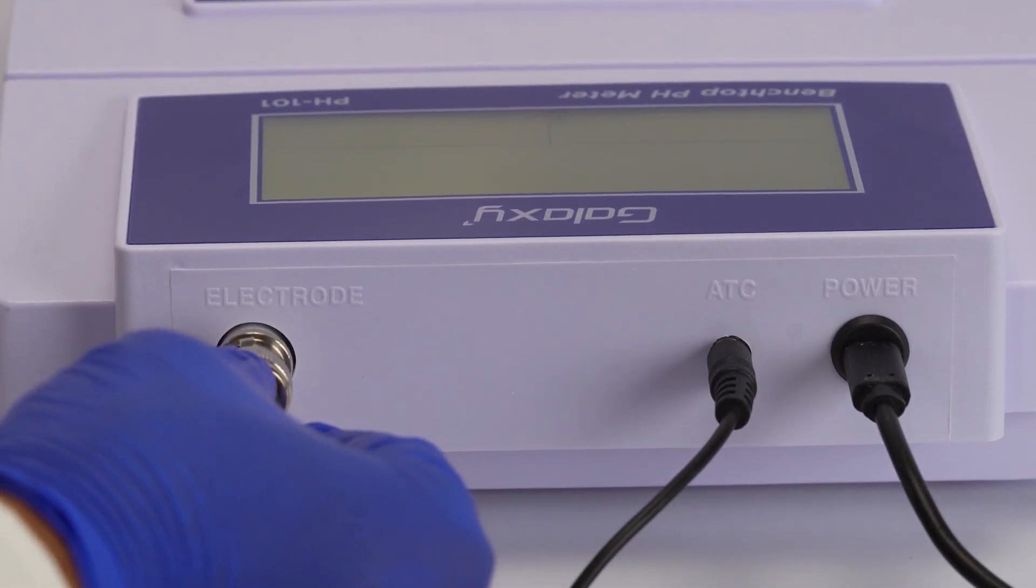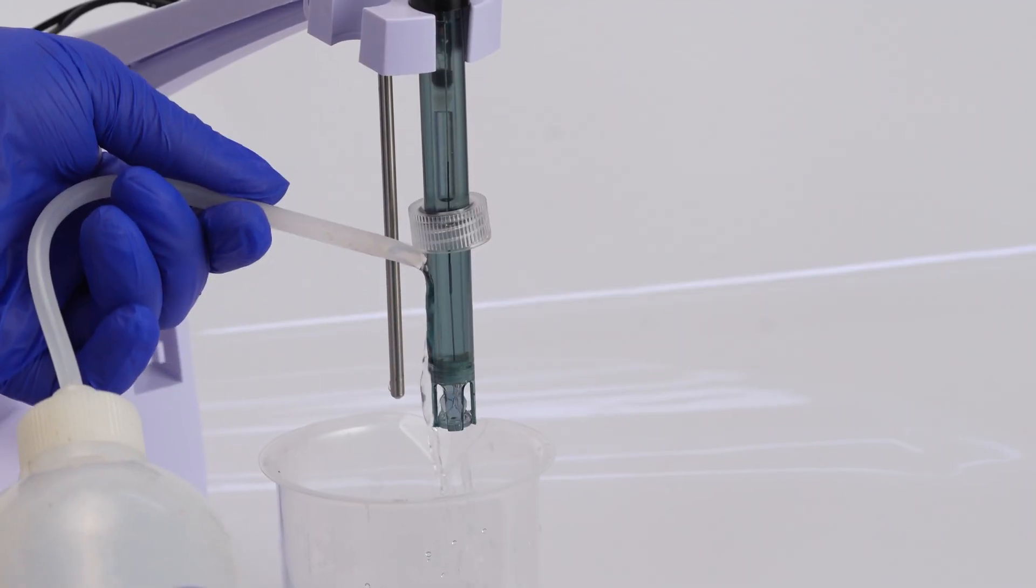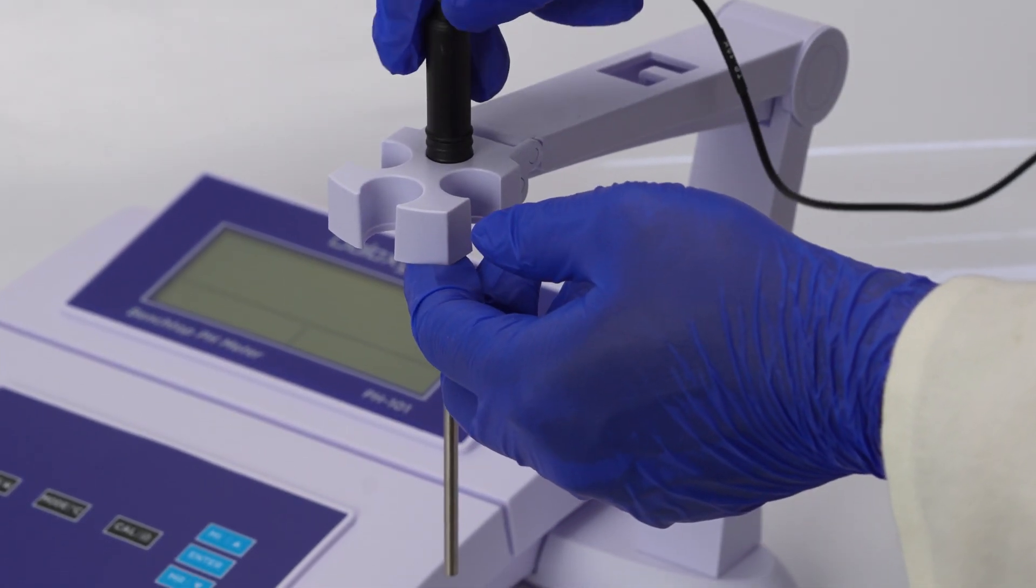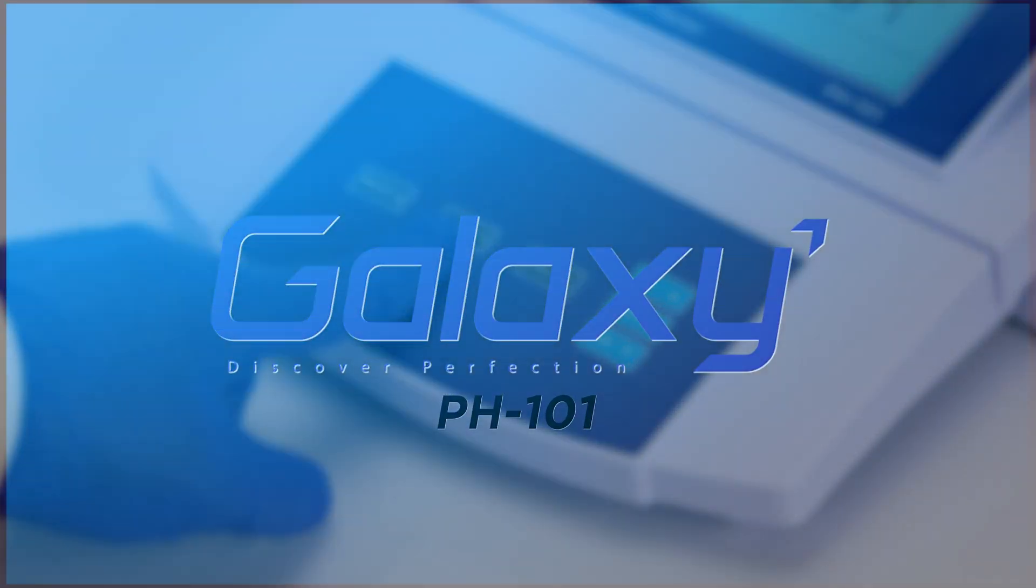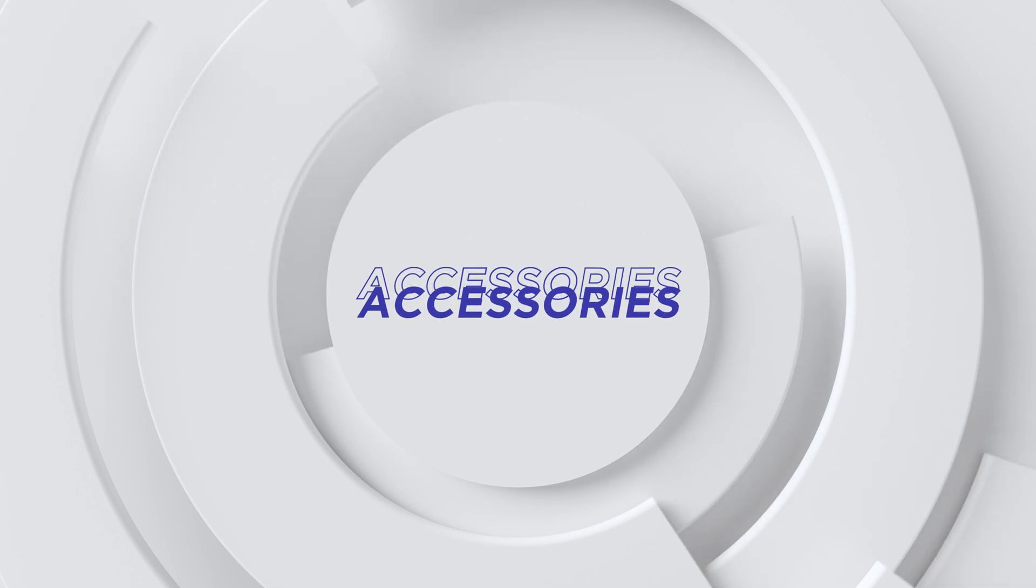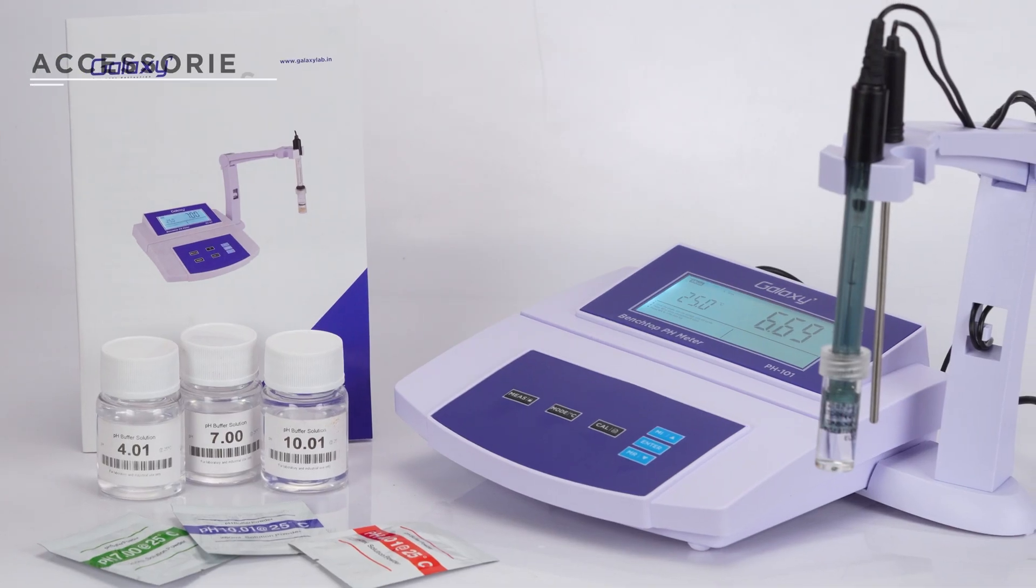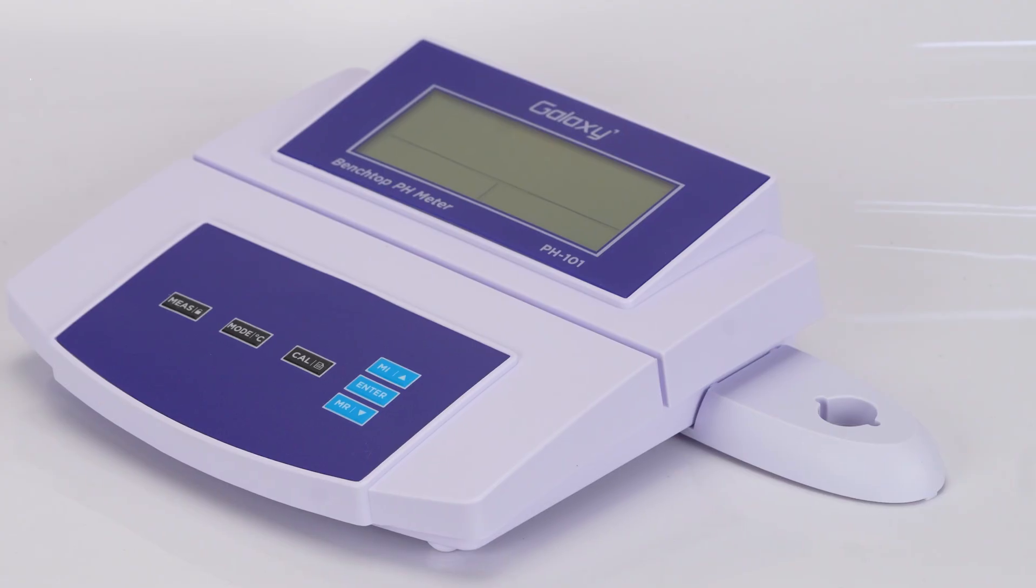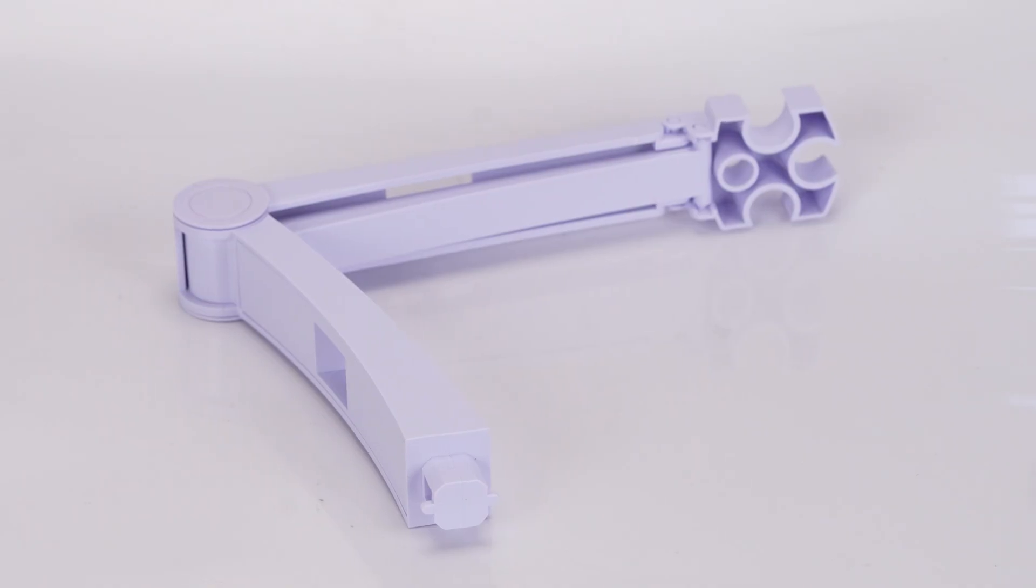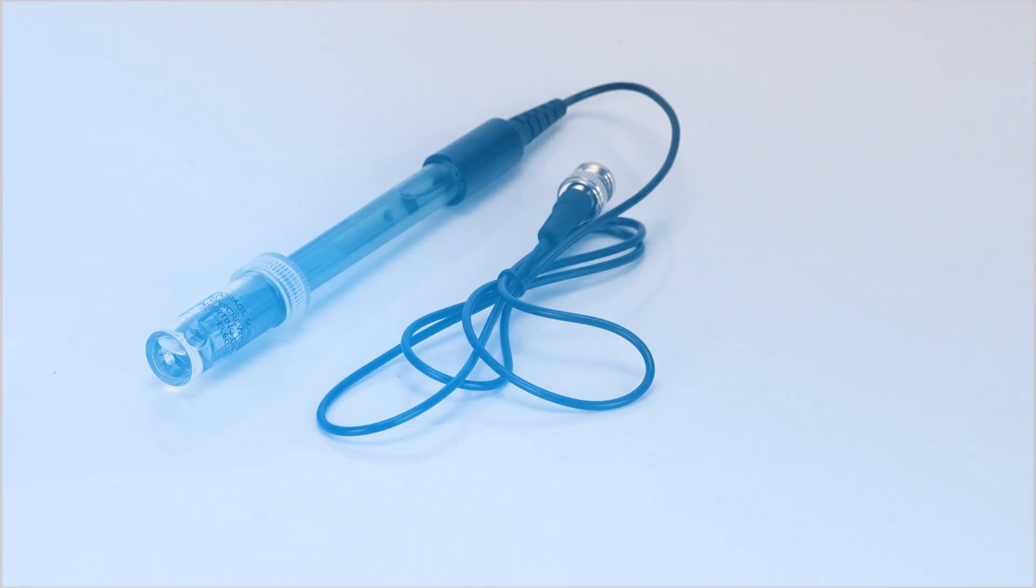Welcome to our tutorial. In this video we will demonstrate the proper setup and operation of the pH 101 pH meter, ensuring accurate and reliable measurements. The pH 101 pH meter comes with the main unit, an electrode arm, a pH electrode, a temperature probe, a standard pH buffer, power adapter, and a user manual.